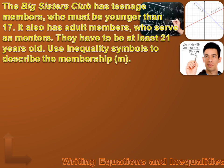Now let's talk about compound inequalities, using a real-world situation. The Big Sisters Club has teenage members who must be younger than 17. It also has adult members who serve as mentors and must be at least 21 years old. We'll use inequality symbols to describe the membership M, which includes both teenagers and adult mentors — two different groups to describe.